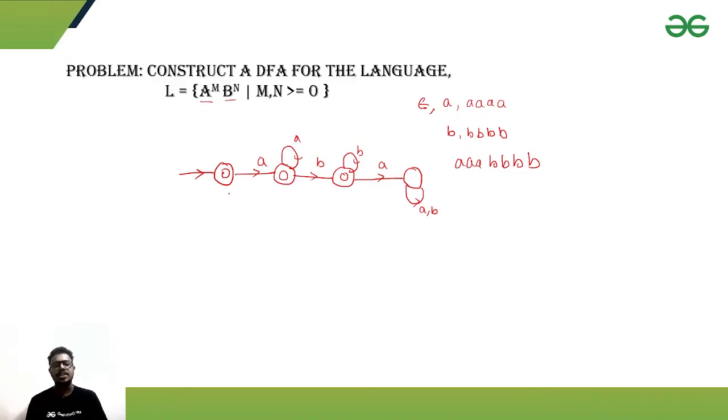We can basically merge these two states. Because we really do not need a to be our string to be accepted. So, we can merge these two states into a single state. Here, this null condition will be accepted, all the a's will come here itself. And if you are getting a single b, we can go to here itself. And after that, if you are getting another a, it will lead to a dead state.